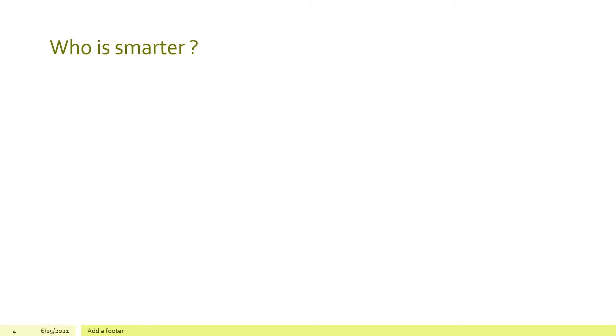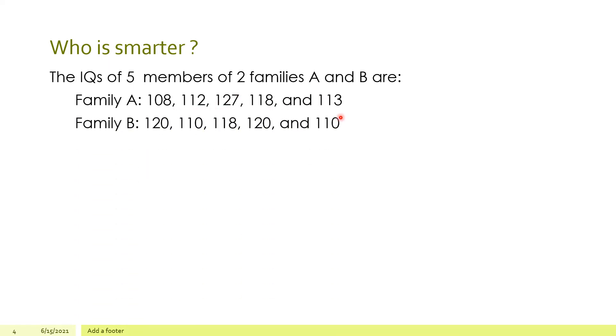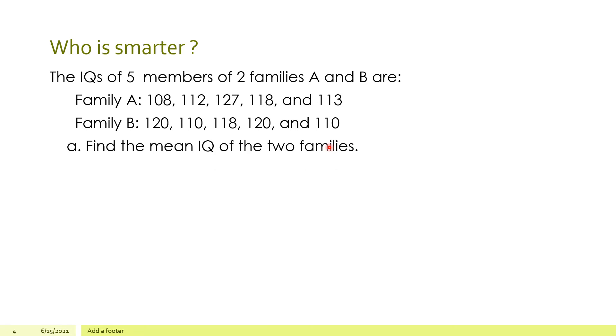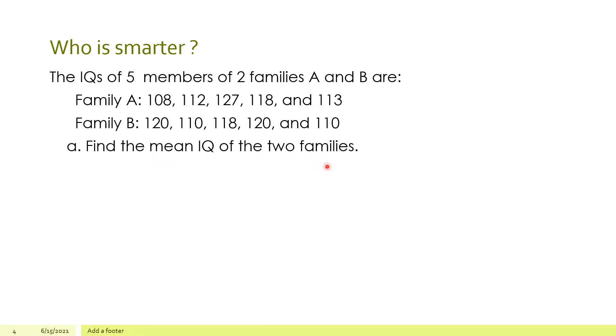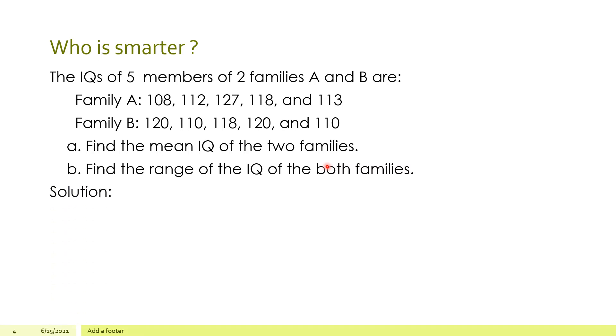Who is smarter? We have the IQ of 5 members of 2 families A and B. Family A has 108, 112, 127, 118, and 113. And family B is 120, 110, 118, 120, and 110. So find the mean IQ of the 2 families and find the range of both families.